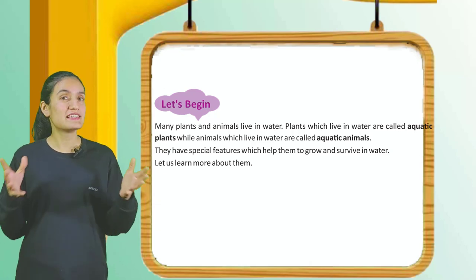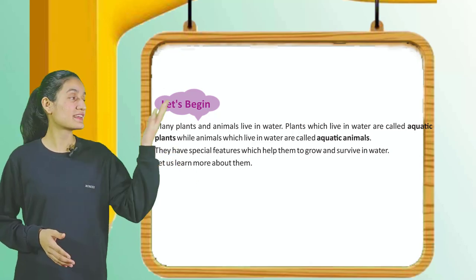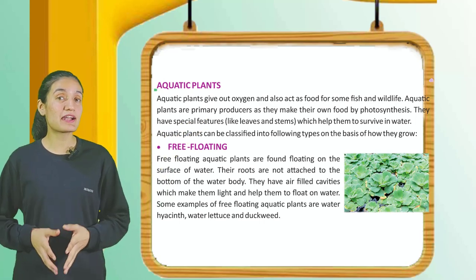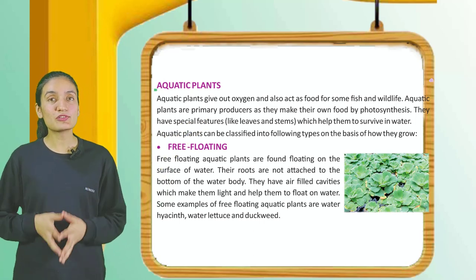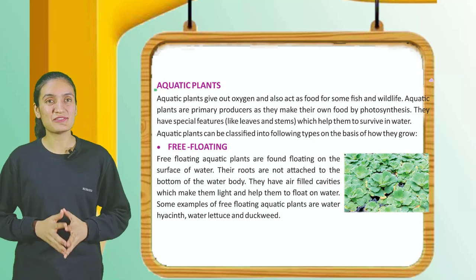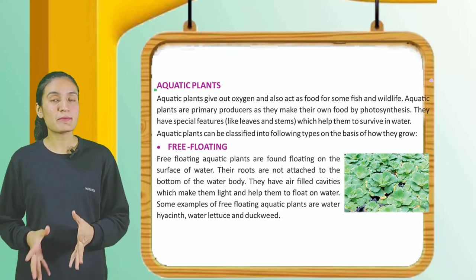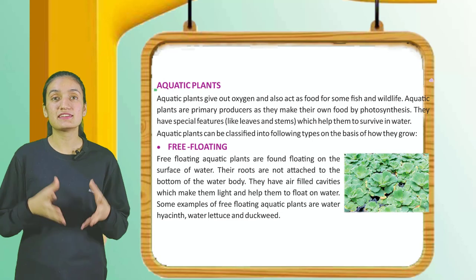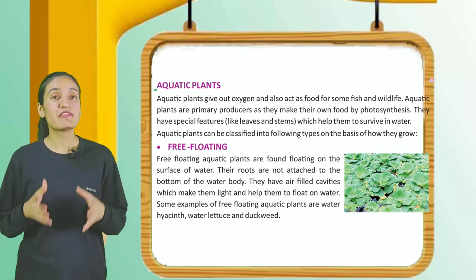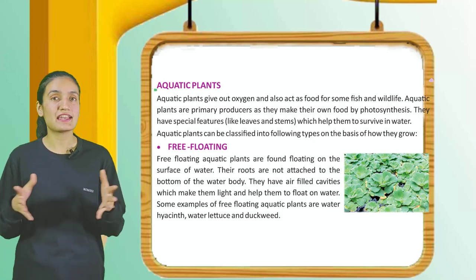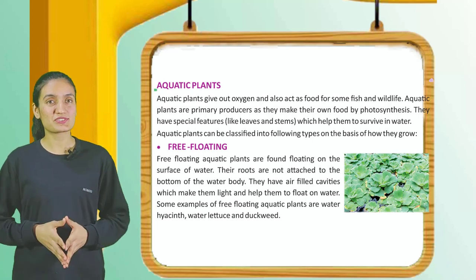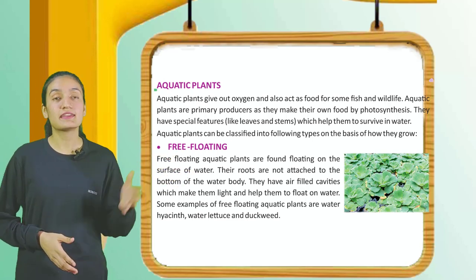Aquatic plants and animals have special features which help them to grow and survive in water. Aquatic plants give out oxygen and also act as food for some freshwater and wildlife. Aquatic plants are primary producers as they make their own food by photosynthesis.